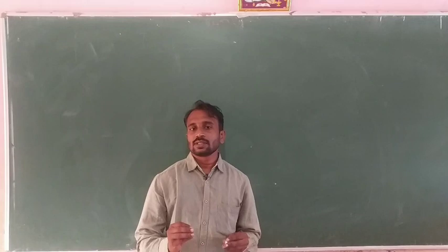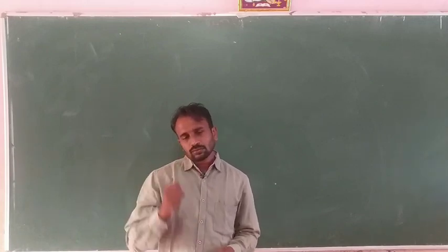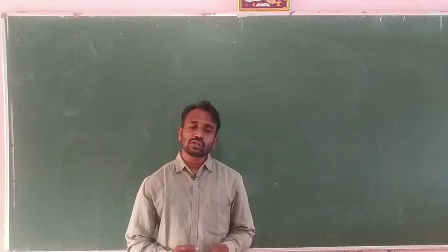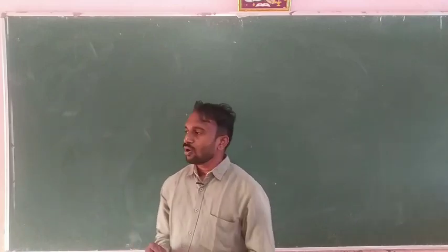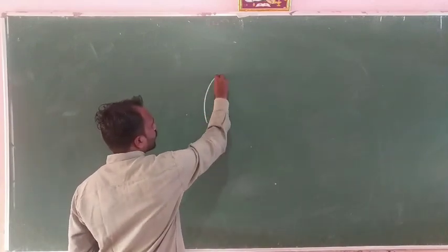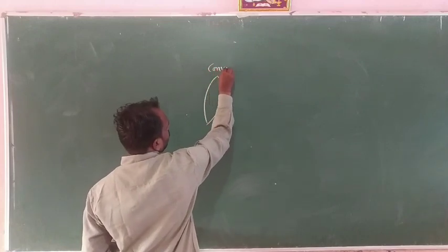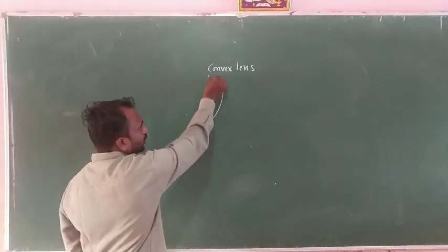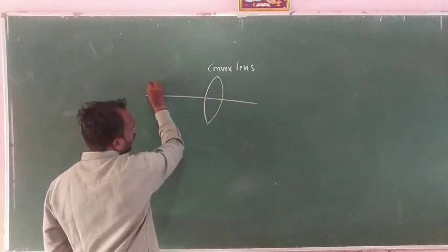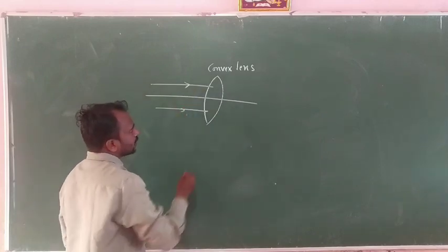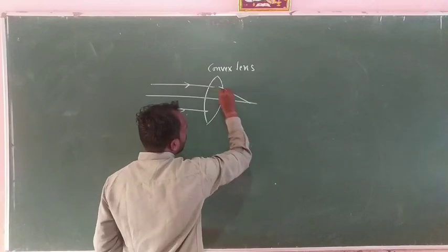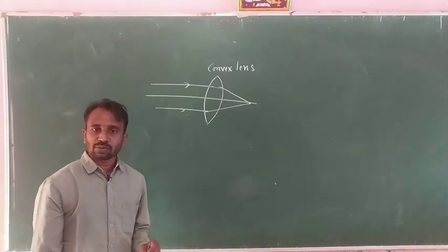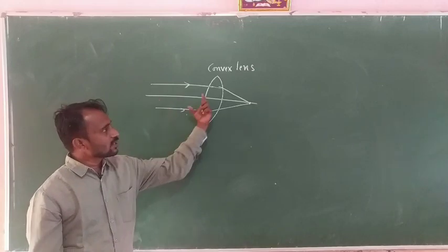Today we will discuss lenses. There are mainly two types of lenses: one is a convex lens and another is a concave lens. In a convex lens, the middle part is thick and the edges are thinner. When a parallel beam of light rays passes through a convex lens, these light rays converge — so a convex lens always produces a converging beam of light.